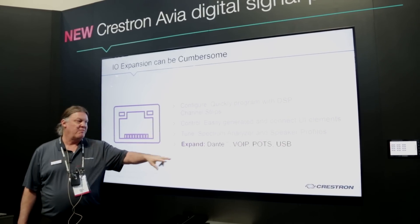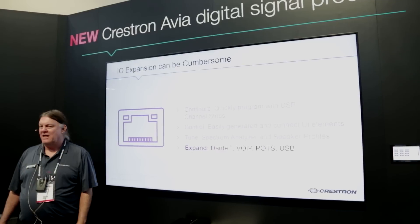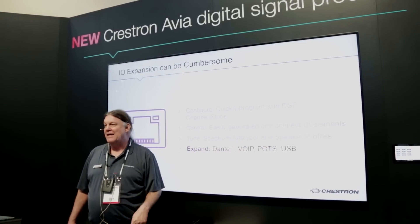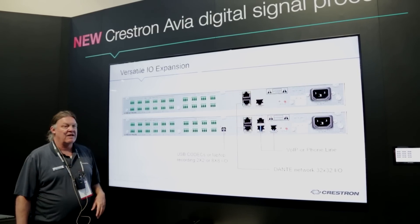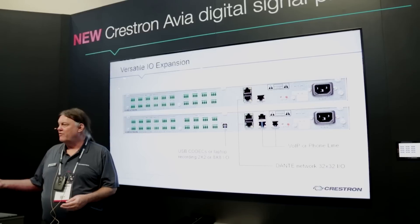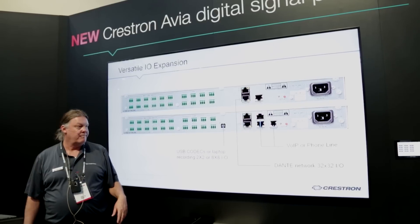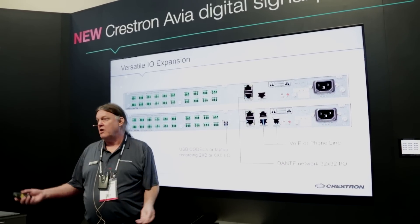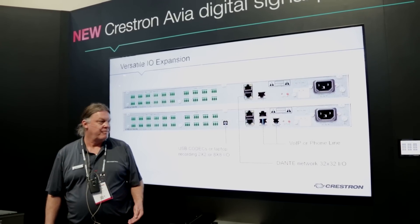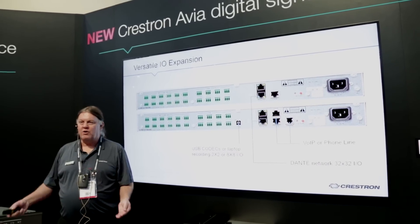The fourth issue is expansion can be cumbersome. We have Dante-enabled models, which is kind of the de facto standard. We also have Voice over IP, plain old telephone systems, and USB ins and outs on various models to allow for connectivity in a wide range of means. USB allows us to go out to codecs like our Unified Communications Skype for Business model or to a laptop for courtroom recording. Dante straps models together and also interfaces to other manufacturers' Dante-enabled microphones. VoIP or phone line outs are basically for audio conferencing, and we have a codec right in some of our devices.